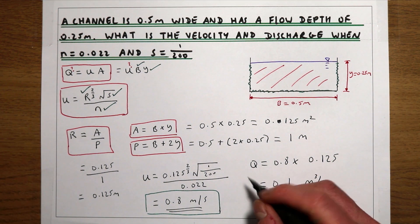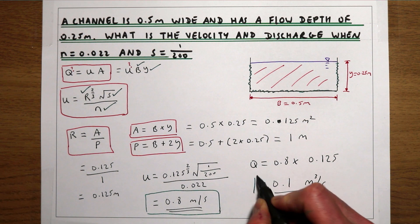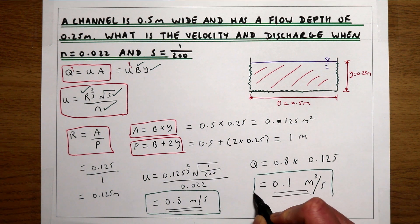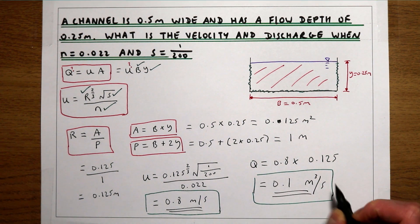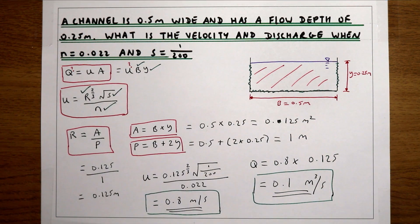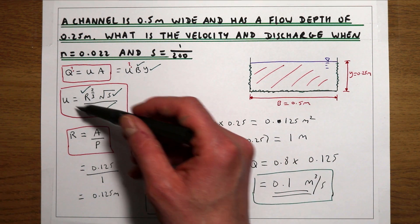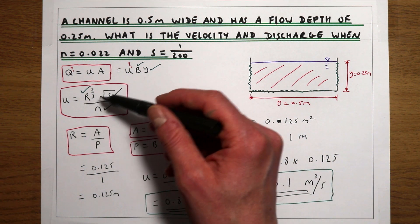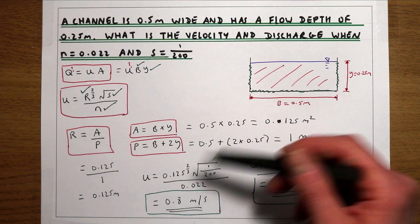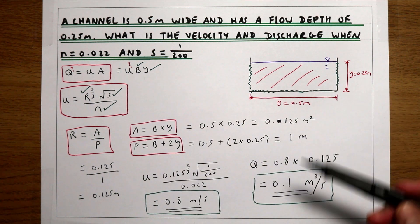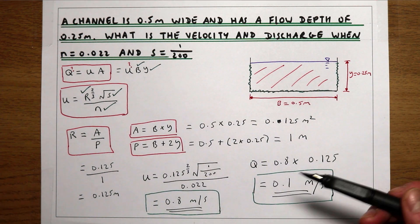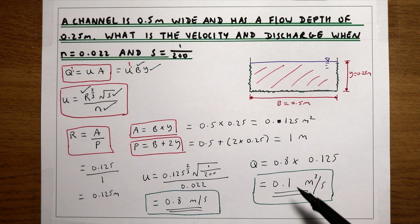To summarise: to work out velocity and flow rate in a channel where we're given the slope and roughness, we first use Manning's equation to get the velocity from the given parameters, and then multiply that velocity by the cross-sectional area of the channel to get the final discharge.